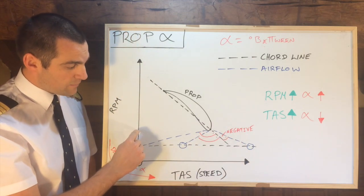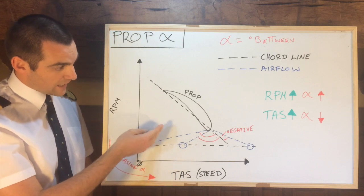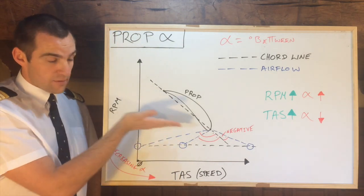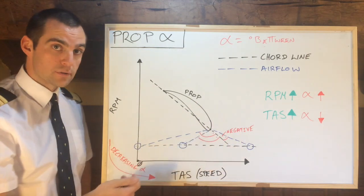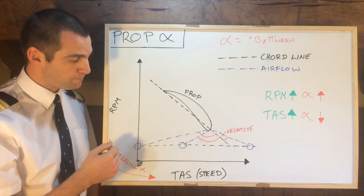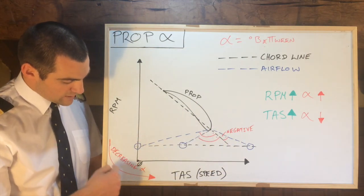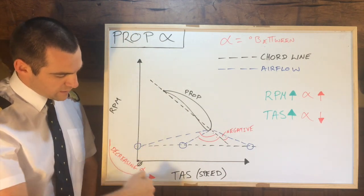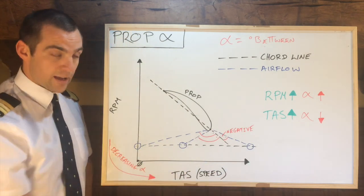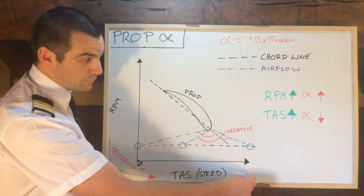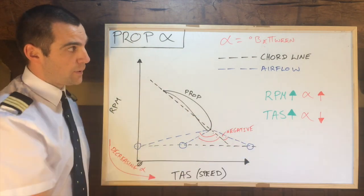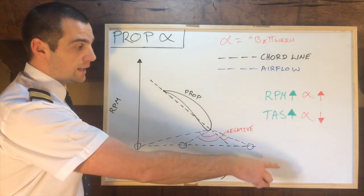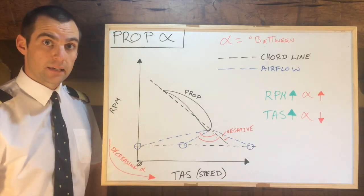If we increase our RPM, you can see there, the angle of attack will actually increase, because it will pull that relative airflow away from the nose as we increase our RPM. You can see with my little decreasing angle of attack arrow, that follows all the way down. So if we're going in this direction, the angle of attack is decreasing, and it can become negative once it goes past the chord line. There will be a point at which the angle of attack is zero, and then it will become negative.